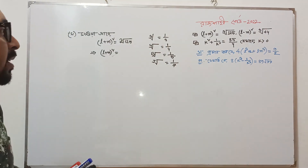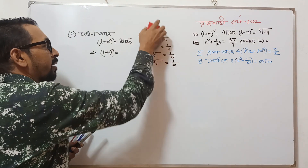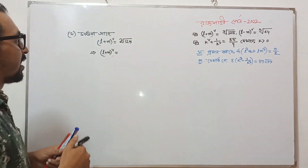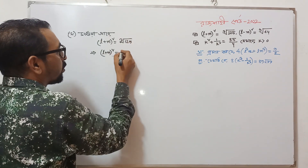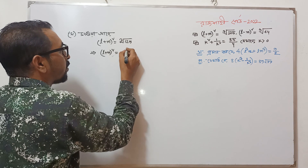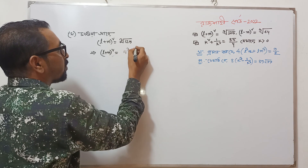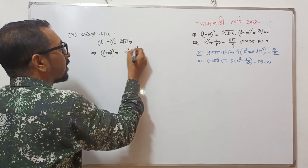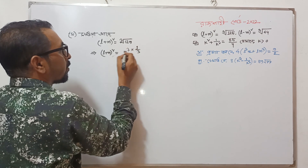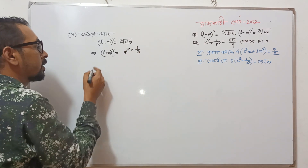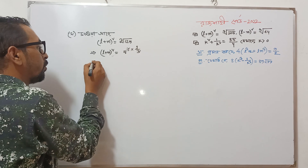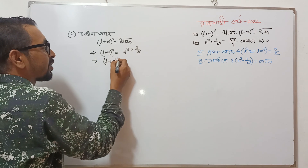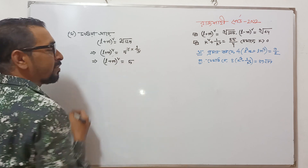We have to write the code for the first step. So we will write: 5L Q g1 divided 3. L plus M whole square is equal to 5.